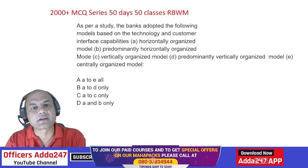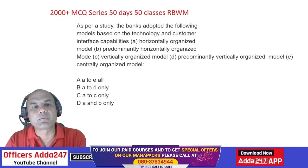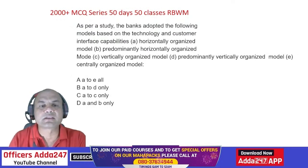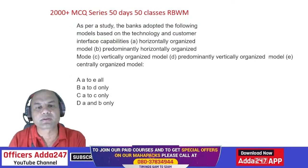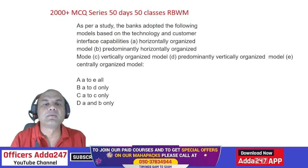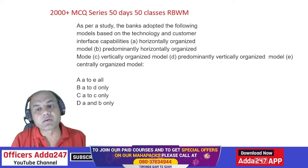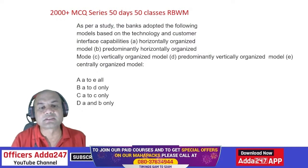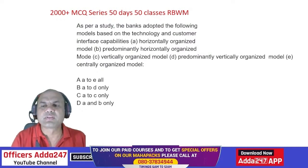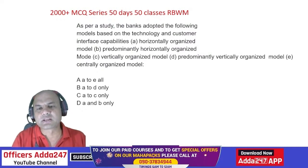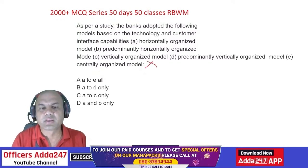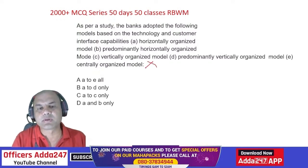As per study, banks adopt the following models based on technology and customer interface capabilities: horizontally organized, predominantly horizontally organized, vertically organized, and predominantly vertically organized. The centrally organized model is not one of these four — so the answer is A to D only.